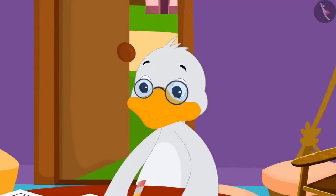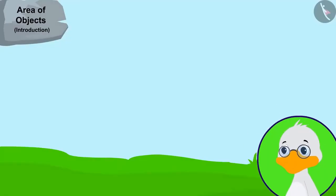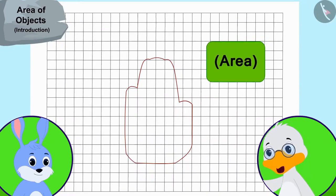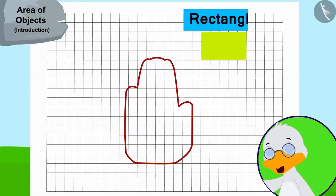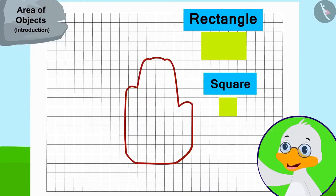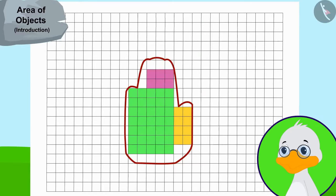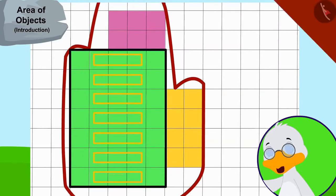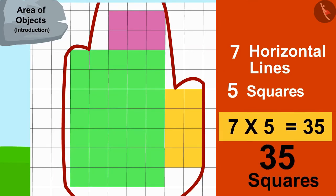Uncle made grid papers using some other papers too by making equal squares of one centimeter long edges. Uncle first took the impression of Bunny's hand on a grid paper. I will need to find an easier process to find its area, thought uncle. Let me first draw as many rectangles and squares as I can in this shape. Uncle made three rectangles in Bunny's hand impression. This rectangle has seven horizontal lines and each line has five squares, meaning there are seven times five or thirty-five squares in this rectangle.